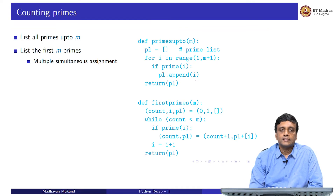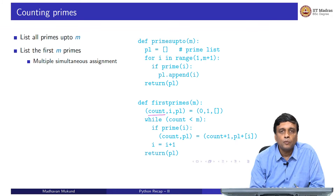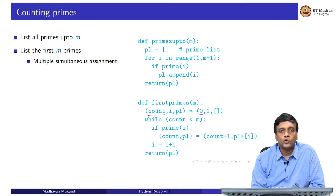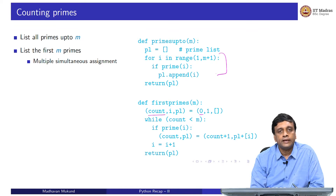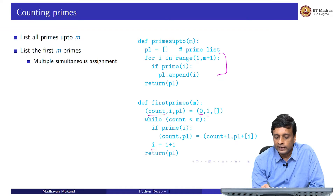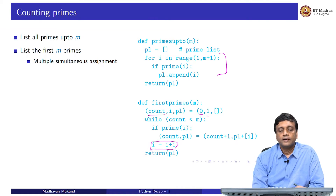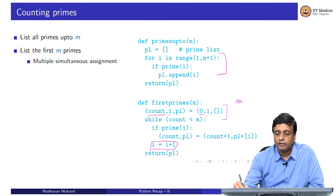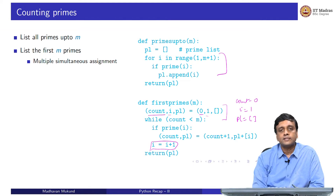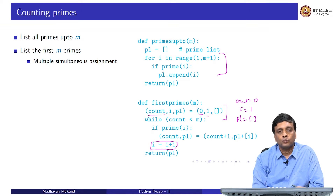One thing to note in this function is the use of multiple assignment in Python. We keep a counter for how many primes we have seen (initially 0), use a while loop since we do not know how many i's to look at, and start with i=1. These three separate assignments — count=0, i=1, and pl=[] — are collapsed into one single tuple assignment.